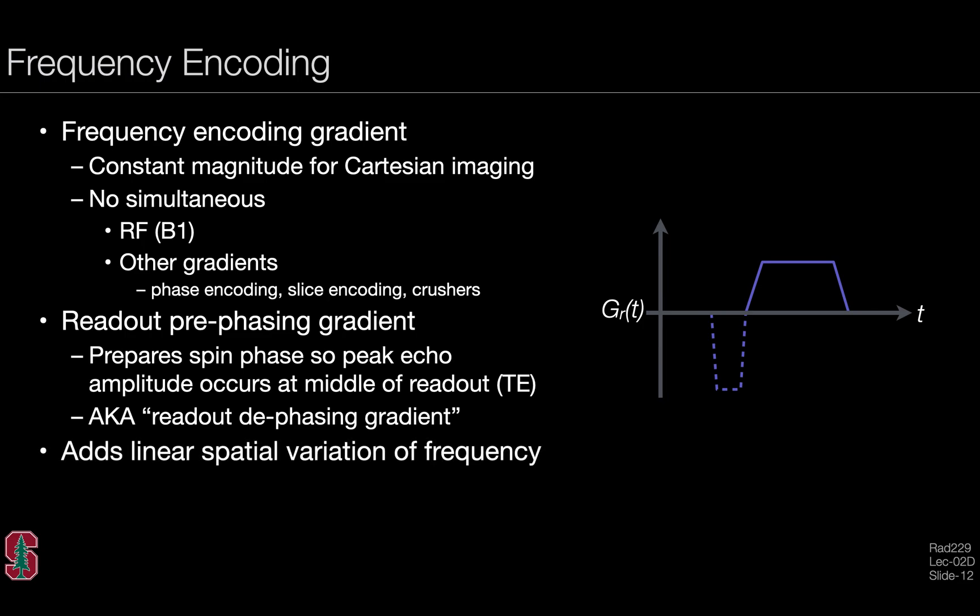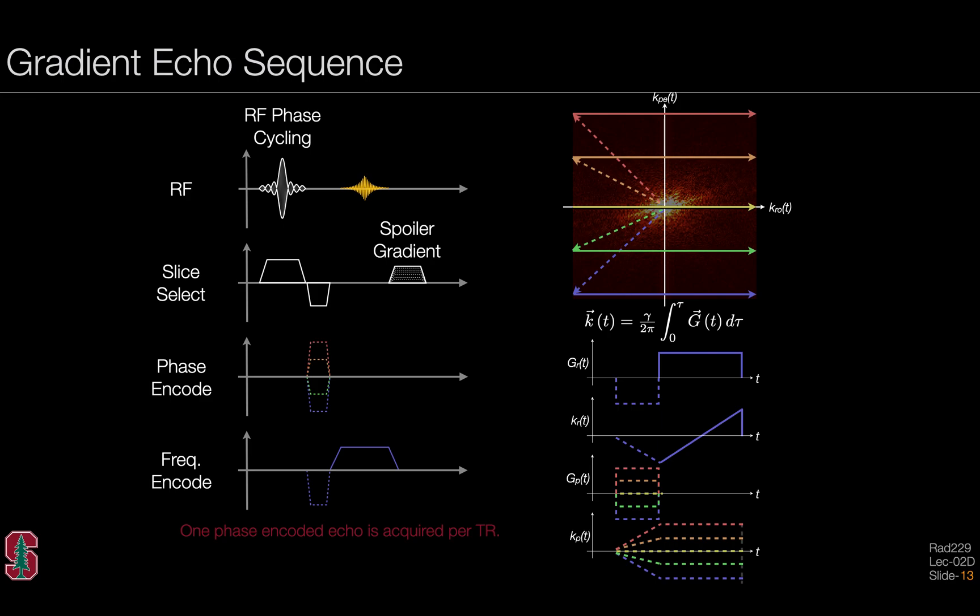The readout gradient itself adds a linear spatial variation in frequency across the object. And we use this for mapping out the spatial frequency content of the underlying object. And of course, it helps us form an echo, which we record using the coils and receiver system. This is a gradient echo sequence with slice-selective excitation, phase encoding, and the readout gradient. The readout pre-phaser helps prepare the spin phase and move us across k-space so that during the readout acquisition, the readout gradient as we're moving across k-space will come through the middle of k-space to acquire a line of k-space that helps us fill in some of the k-space matrix necessary for sampling the spatial frequencies for the underlying object.